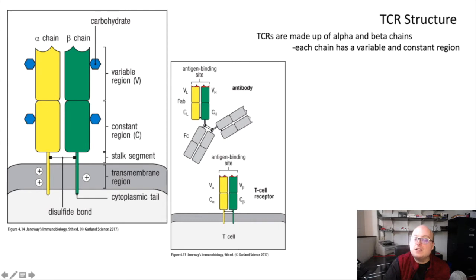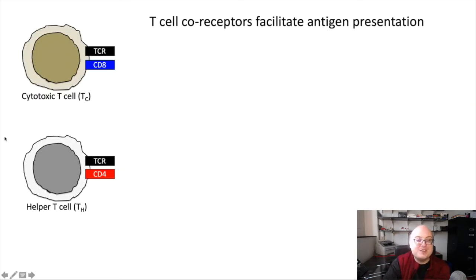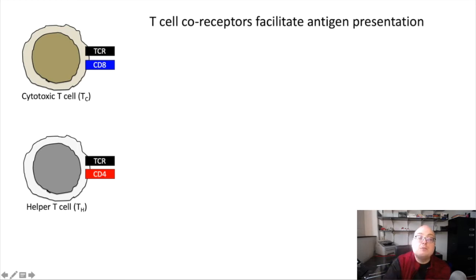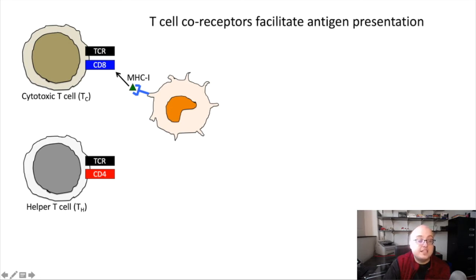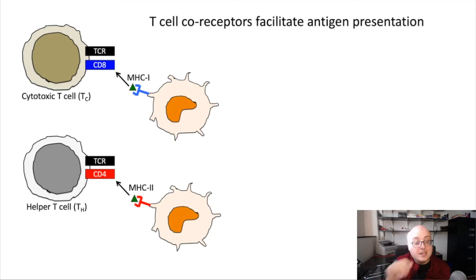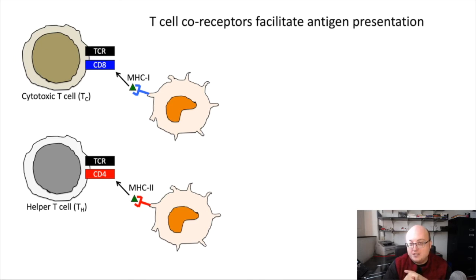What does the T-cell receptor need in order to accomplish its signaling? It needs to bind to antigen, but T-cell receptors also require the activity of a co-receptor in order to signal. Those co-receptors are CD8 and CD4. Cytotoxic T-cells express CD8, whereas T-helper cells express CD4. Cytotoxic T-cells, which express CD8, recognize antigen presented by MHC class 1, whereas CD4 facilitates recognition of antigen presented by MHC class 2. So there are three pieces for antigen recognition with T-cells: the T-cell receptor, the co-receptor, and the MHC molecule—all three are needed to transmit a signal downstream.